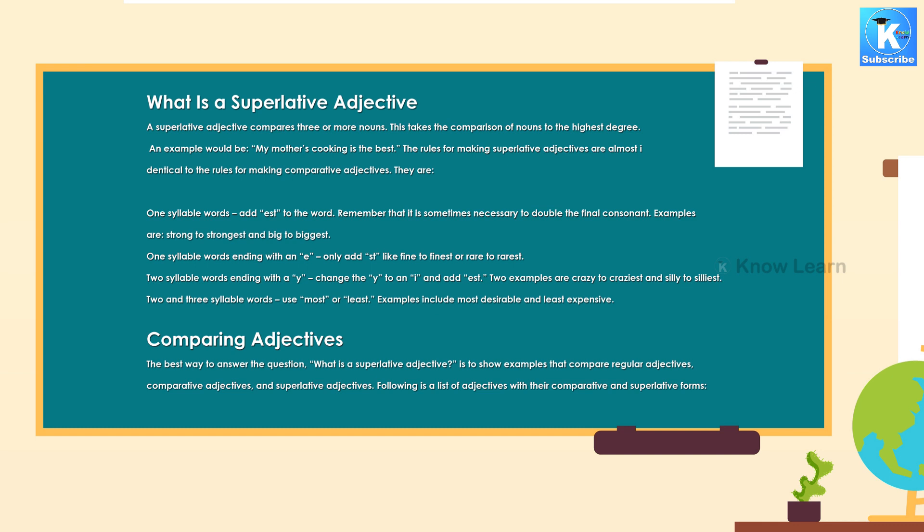The rules for making superlative adjectives are almost identical to the rules for making comparative adjectives. They are: one syllable words, add est to the word. Remember that it is sometimes necessary to double the final consonant. Examples are: strong to strongest and big to biggest.